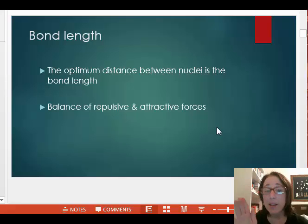The bond length is the optimum distance between two nuclei. This is the distance where the repulsive forces are minimized and attractive forces are maximized.